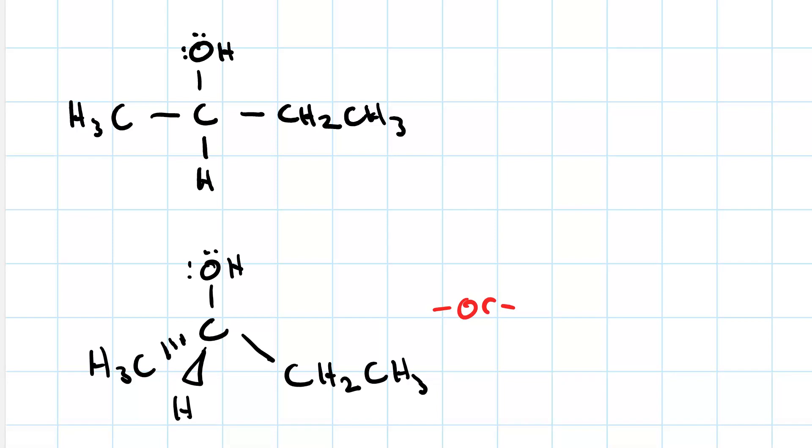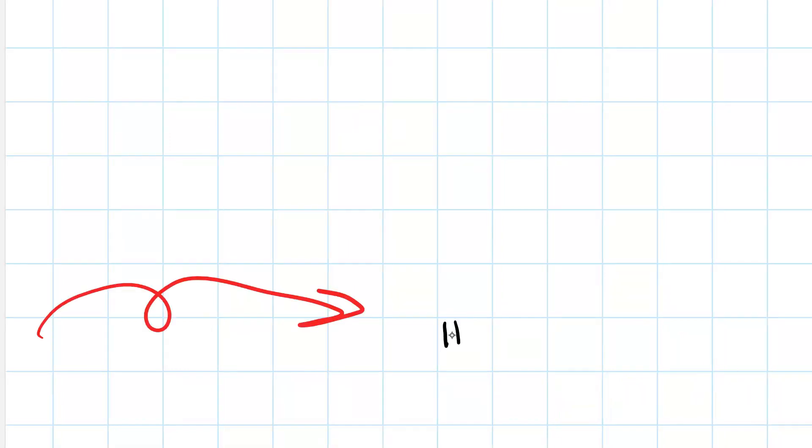Can you draw the other optical isomer that comes from this Lewis structure? Pause and draw it. So here's my answer: we could switch the H and the CH3. Now the H is on the dash going away from us, and the methyl group is coming toward us, and we left the ethyl group and the hydroxyl group alone.